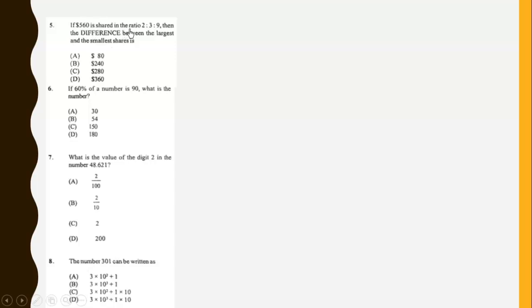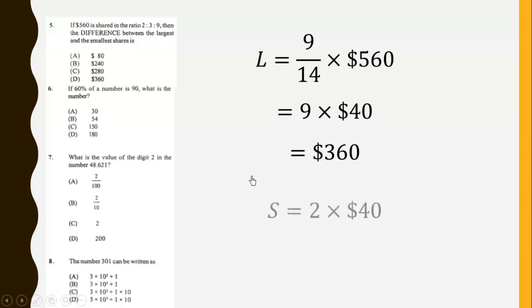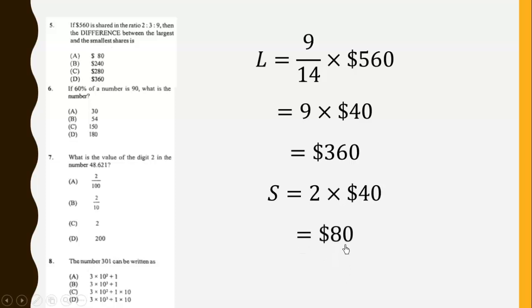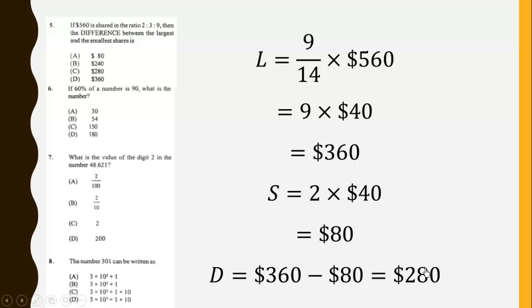If $560 is shared in the ratio 2:3:9, then the difference between the largest and smallest share is: the largest share is 9 over 14 times $560, giving us 9 times $40 which simplifies to $360. The smallest share is 2 times $40 which gives us $80. The difference is $360 minus $80, which gives us $280. So the answer is C.